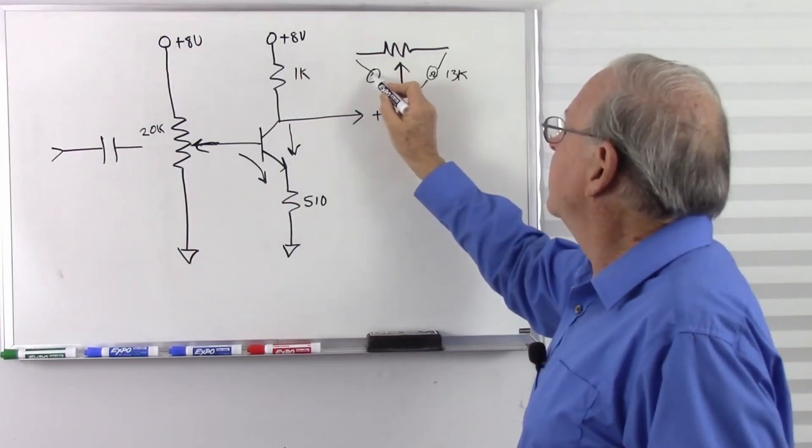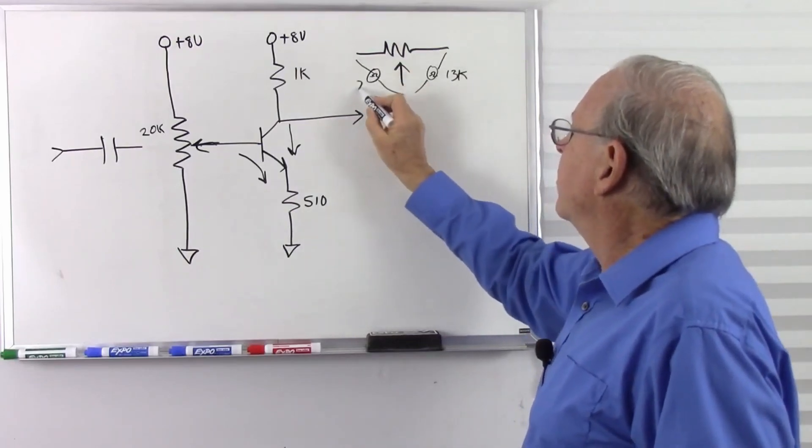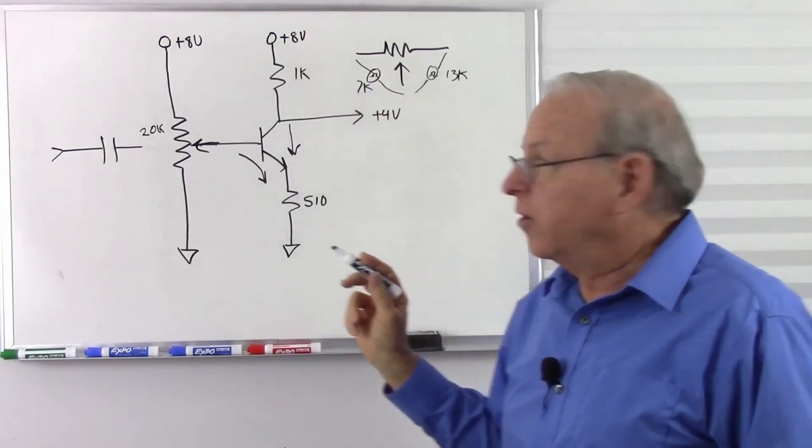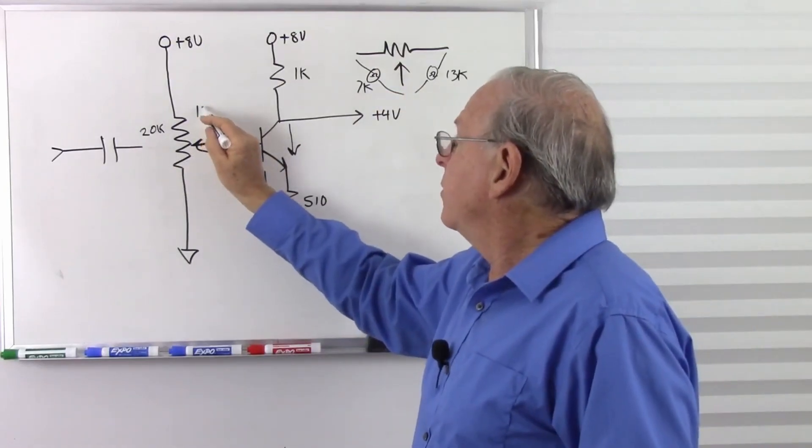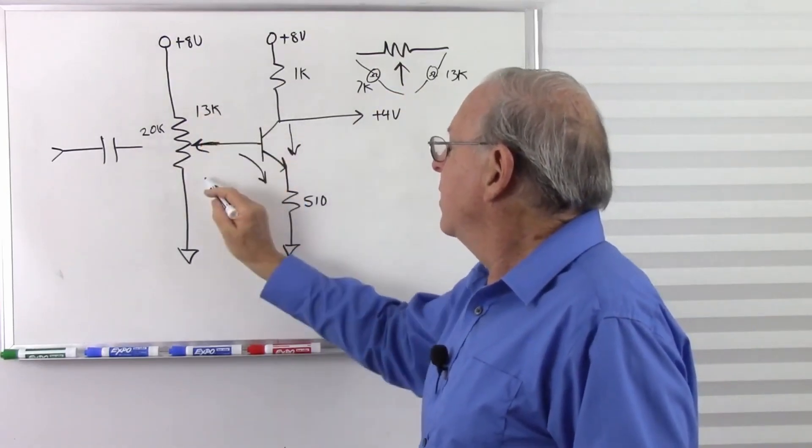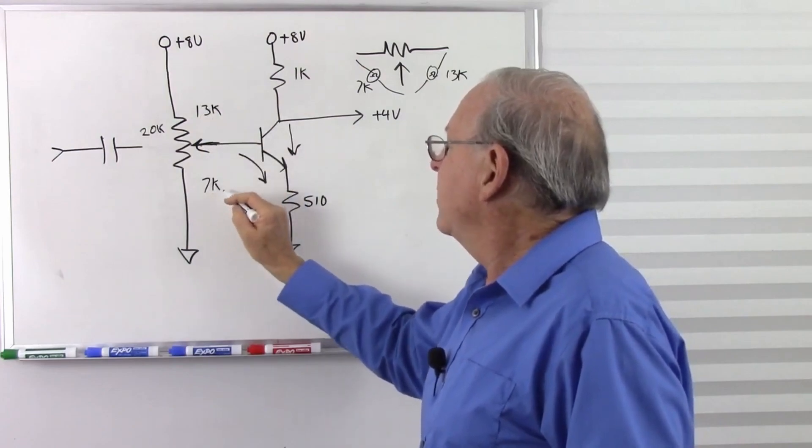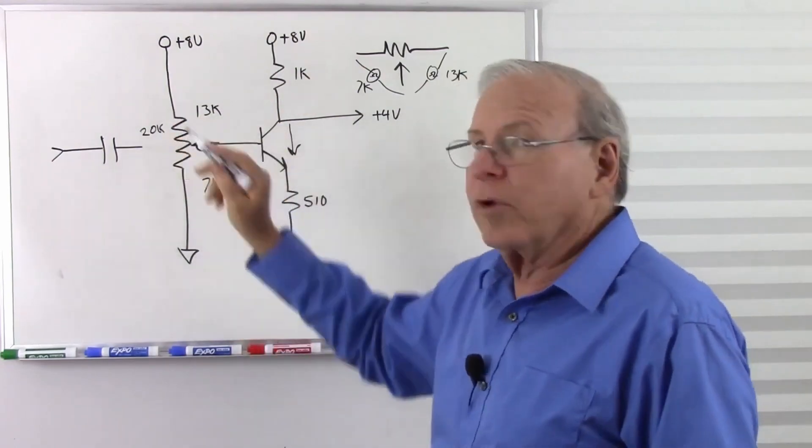And then I put the ohmmeter on the other half and measured 7k. So now I had 13k on this side, 7k on that side, and that adds up to 20k.